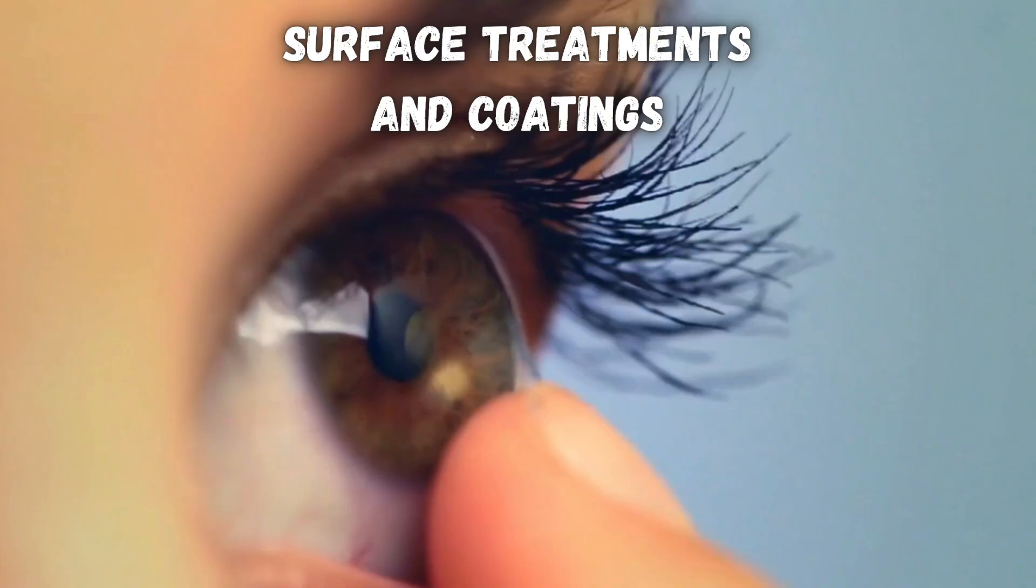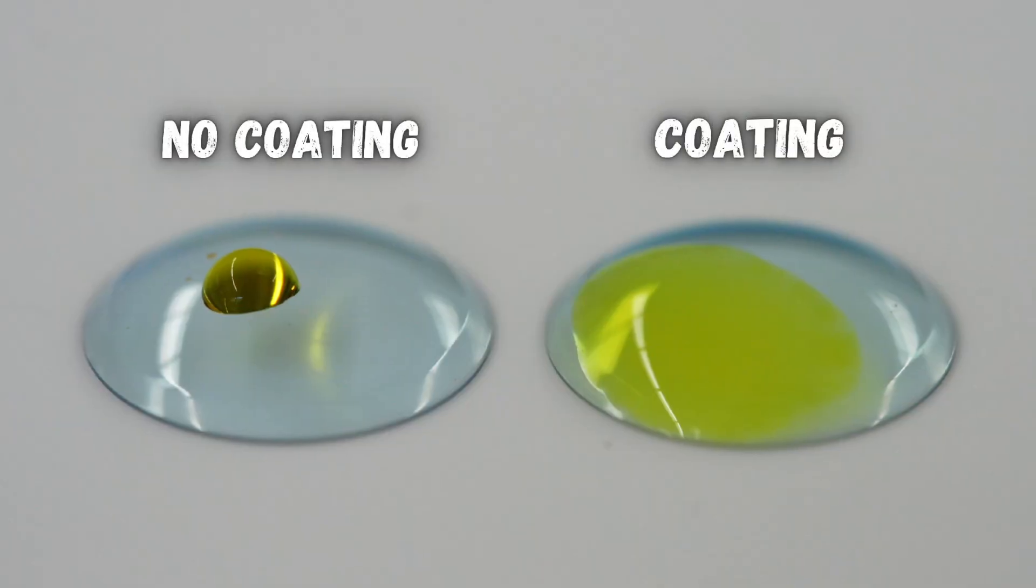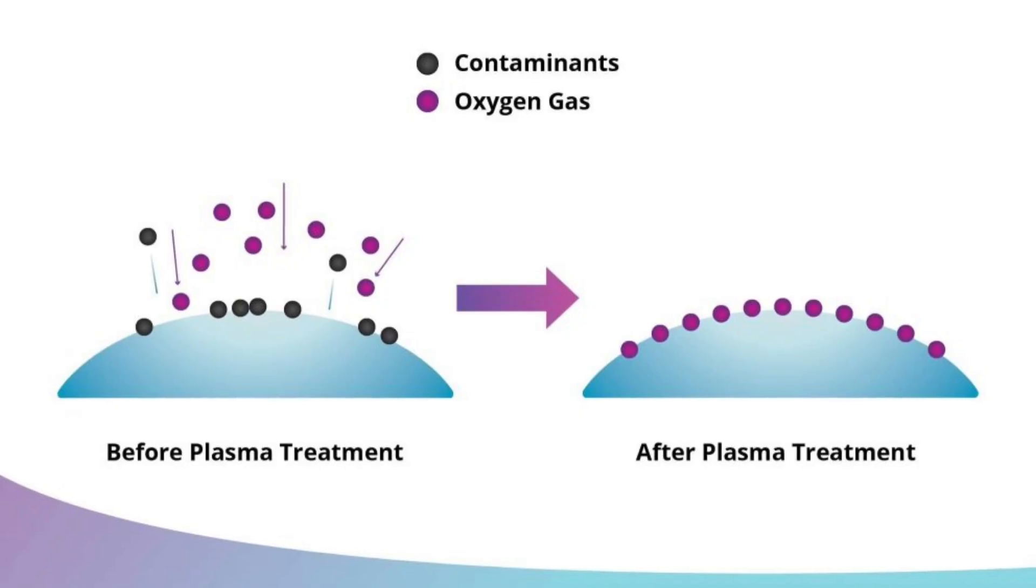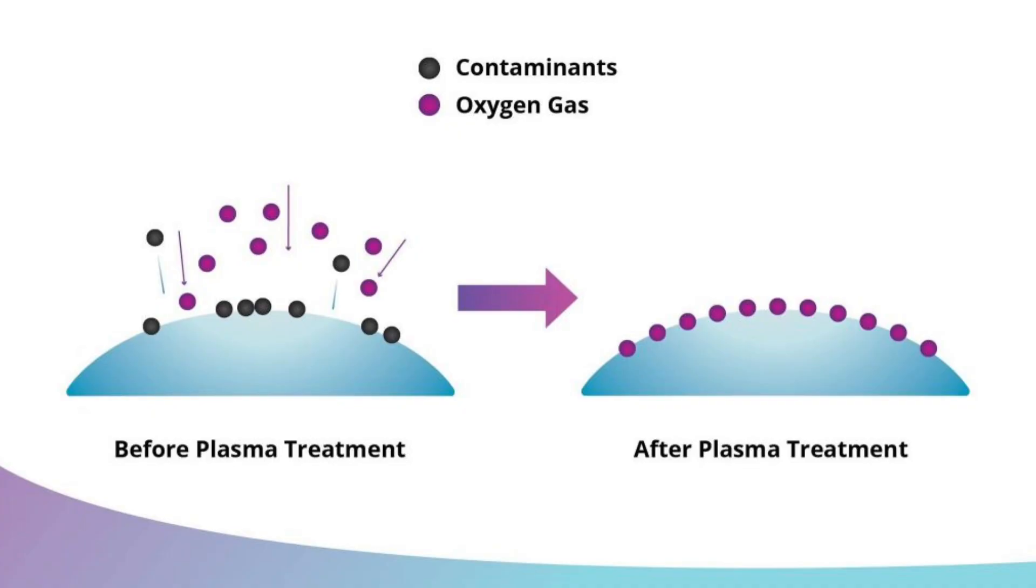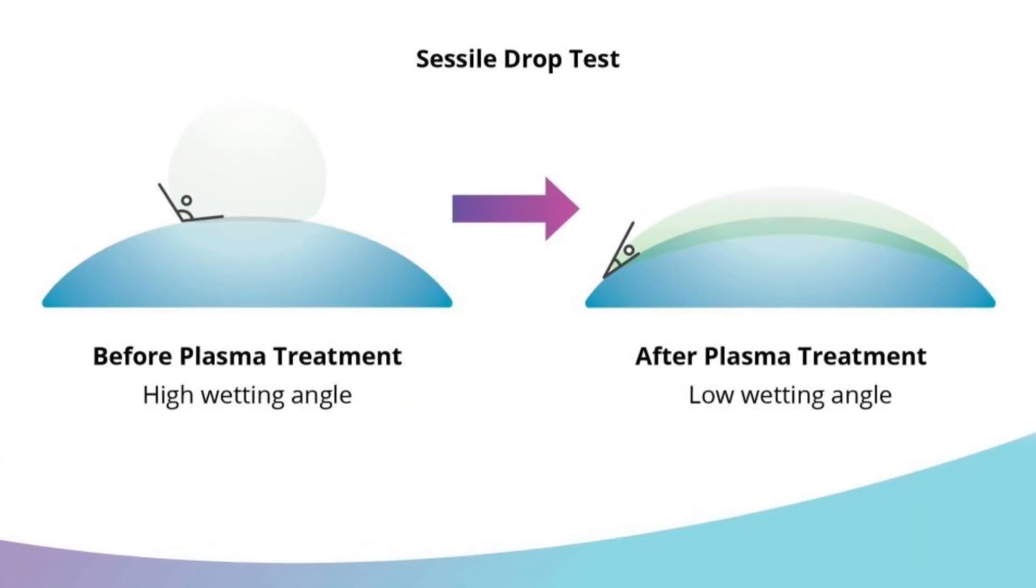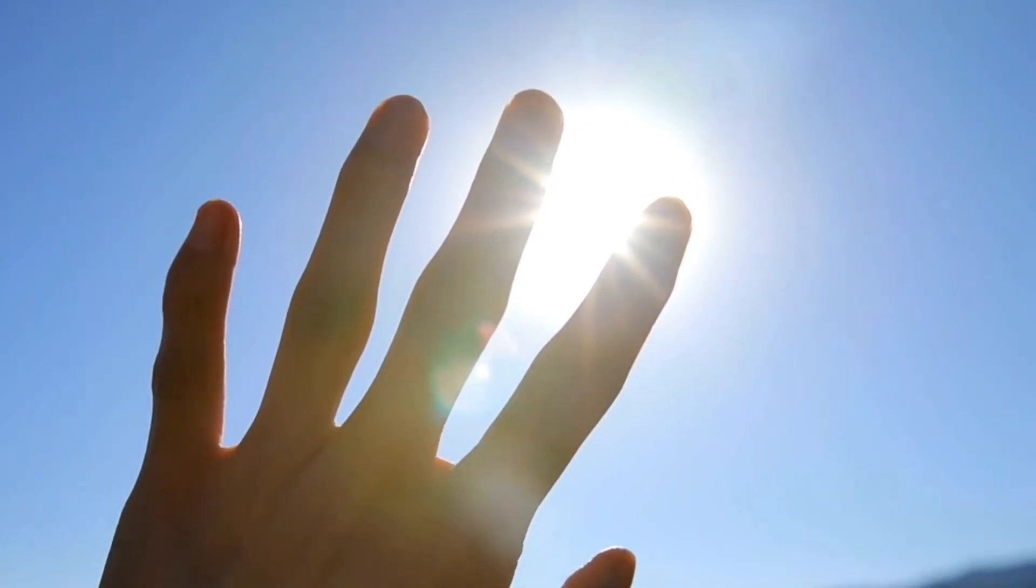Both soft and hard lenses may have surface treatments or coatings added to them, like hydrophilic coatings that improve water retention and prevent dryness, or UV blocking coatings.